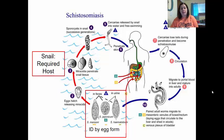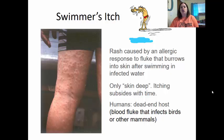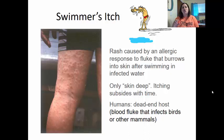The species of snail that carries schistosomiasis is not found in the United States. Swimmer's itch is a rash caused by an allergic response to a fluke that burrows into the skin after swimming in infected waters. It is found deeper in the skin so the itching subsides with time. Humans are actually the dead-end host — the blood fluke that infects birds and other mammals does not actually want to be inside humans, which is why it only causes an allergic reaction. We are unintentionally infected.